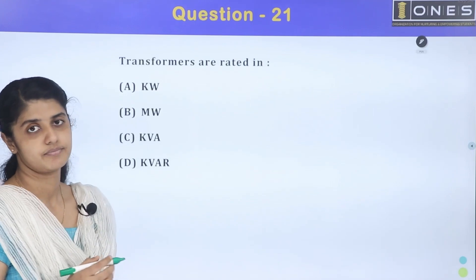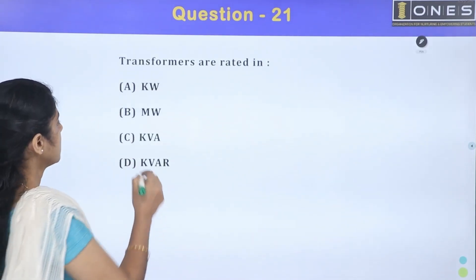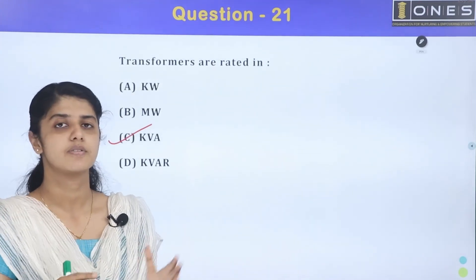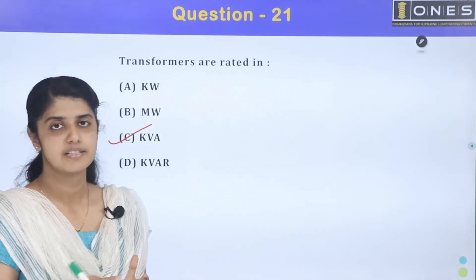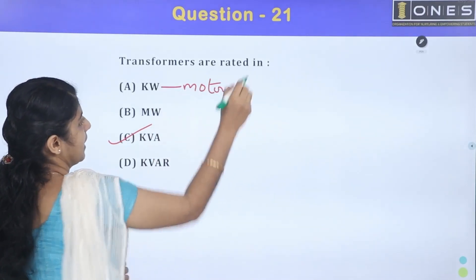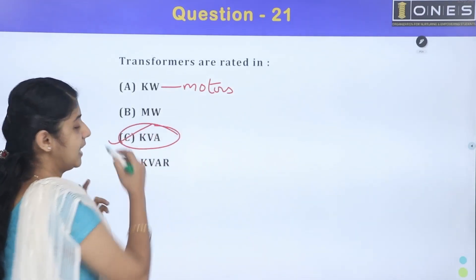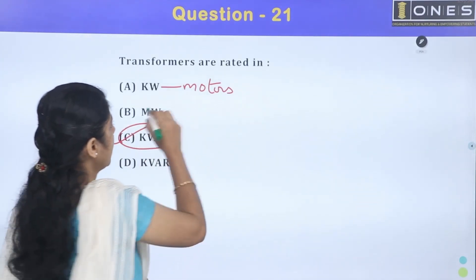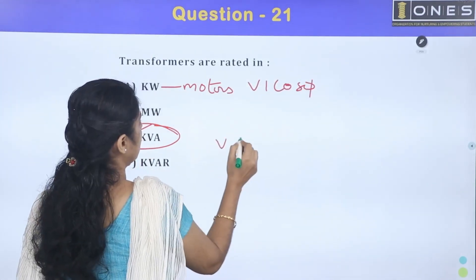Transformers are rated in KVA. Other machines like motors and generators are rated in KW. KVA means voltage times current without power factor consideration.